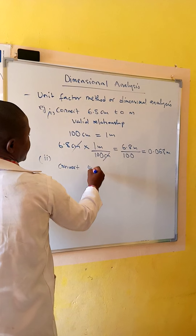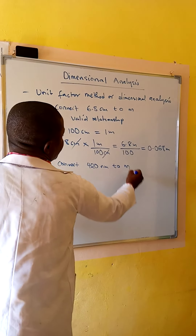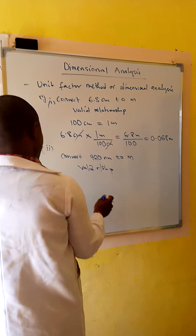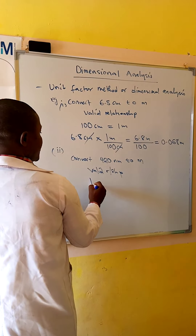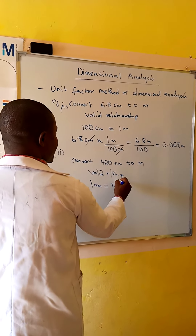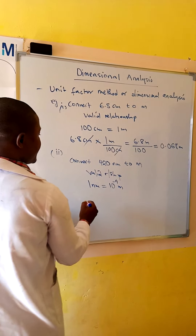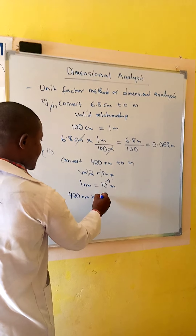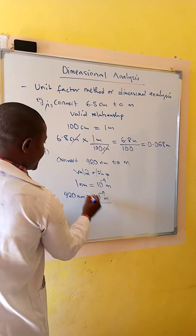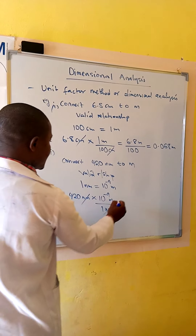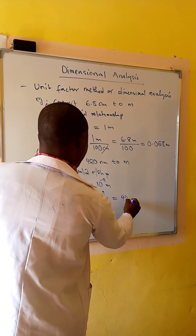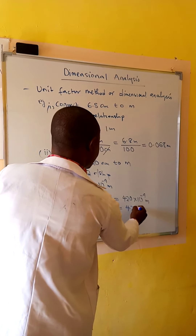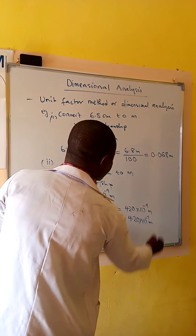Another example: convert 420 nanometers to meters. The valid relationship between nanometers and meters — we know that 1 nanometer is equal to 10 to the power negative 9 meters. So we have 420 nanometers times 10 to the power negative 9 meters over 1 nanometer. The nanometer cancels, giving us 420 times 10 to the power negative 9 meters, which is the same as 4.20 times 10 to the power negative 7 meters.